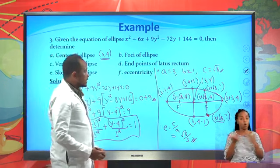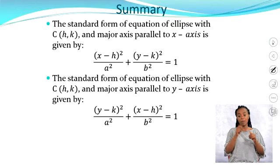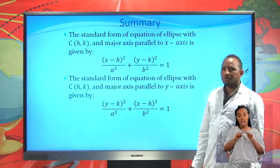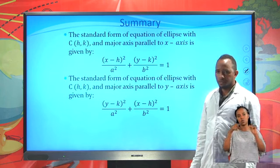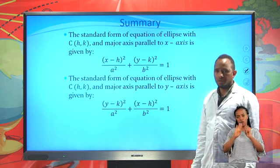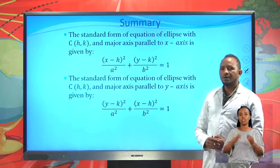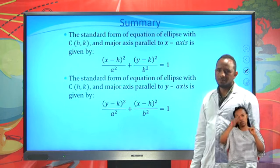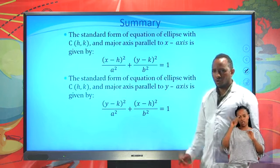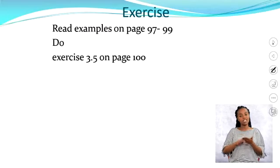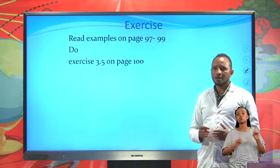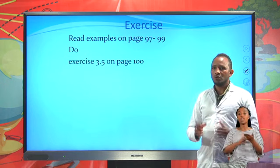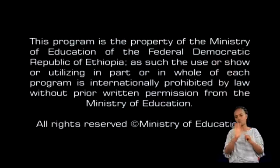This is all about today's lesson. The standard form of the equation of ellipse with center (h, k) and major axis parallel to the x-axis is (x − h)² / a² + (y − k)² / b² = 1. When the major axis is parallel to the y-axis it is (y − k)² / a² + (x − h)² / b² = 1. Please read examples on pages 97 to 99 and try exercise 3.5 on page 100. Until next time, goodbye.